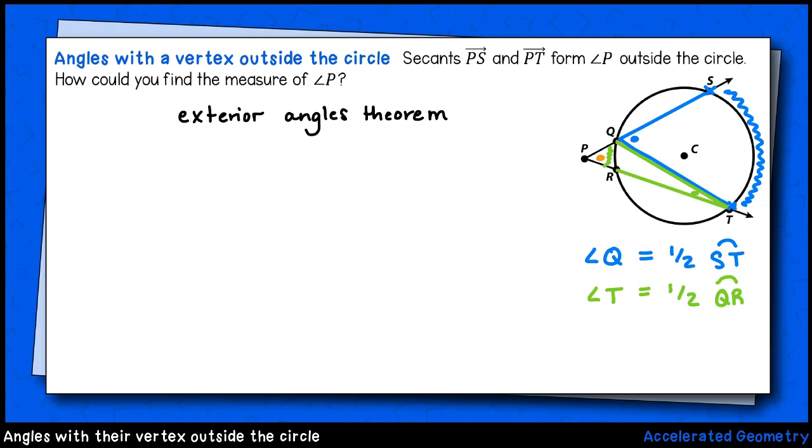Let's pull all these facts together. We had originally stated by the exterior angles theorem that the orange angle P plus the green angle T equals the blue angle Q. After analyzing our figure and using the inscribed angles theorem, we saw that angle Q is equal to one-half of the intercepted arc ST.